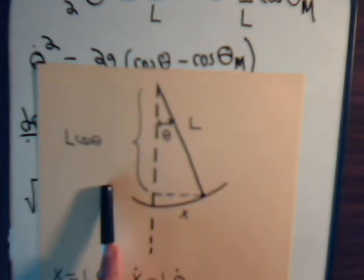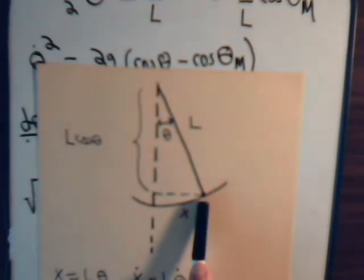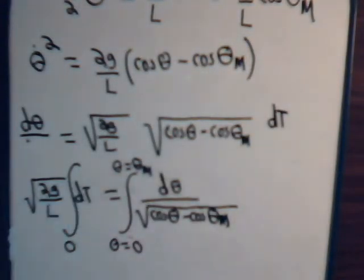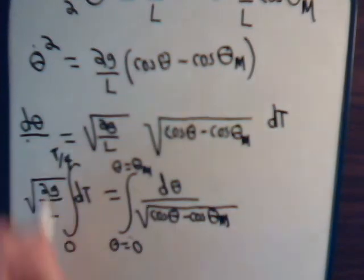When we go from here to theta maximum, that's only one-fourth of the cycle. It goes to here, then back to here — that's one-half the cycle — then over to here, that's three-quarters of the cycle, then back down to complete the entire cycle. So the amount of time to go from here to here is capital T divided by four, where T is the period. So the upper limit on the time integral would be capital T divided by four.